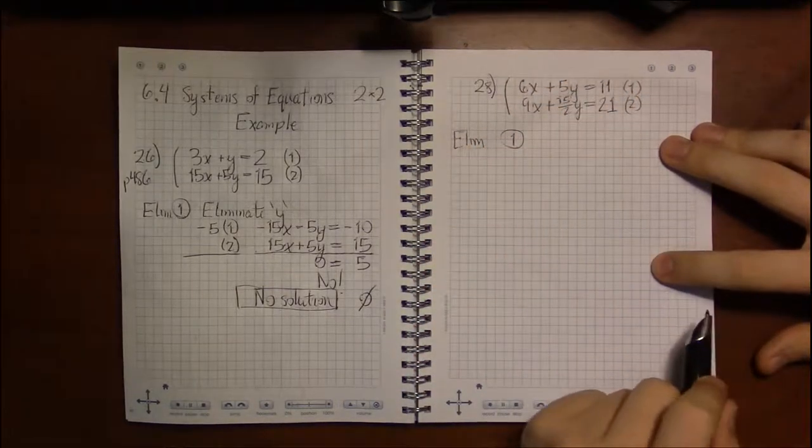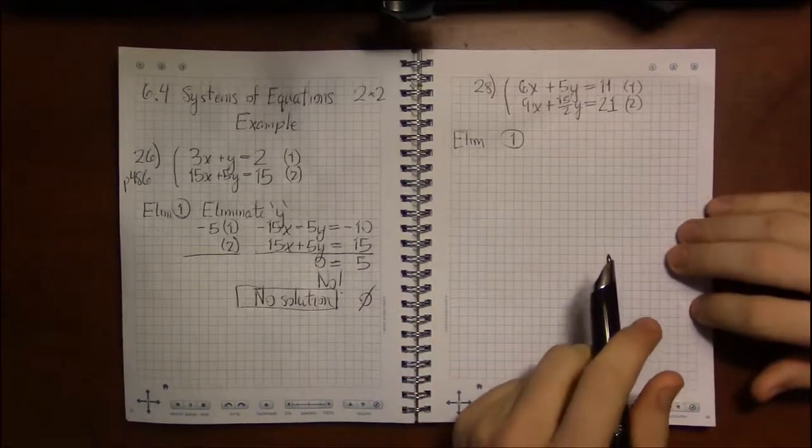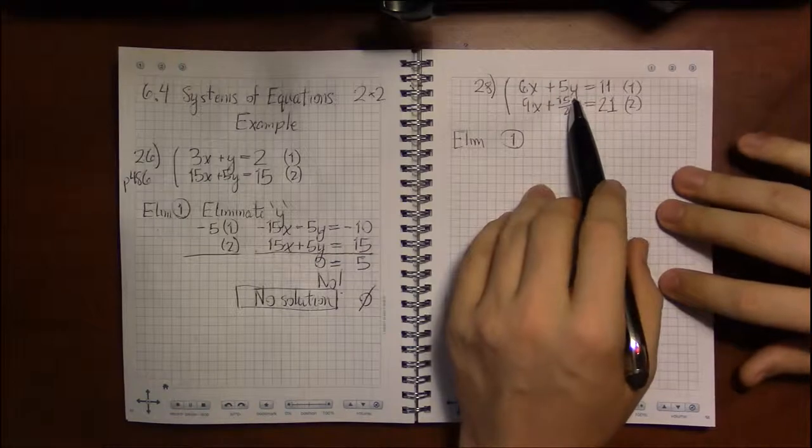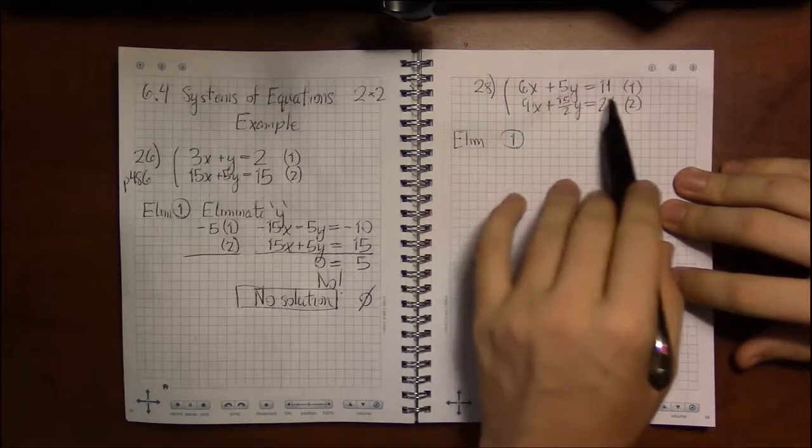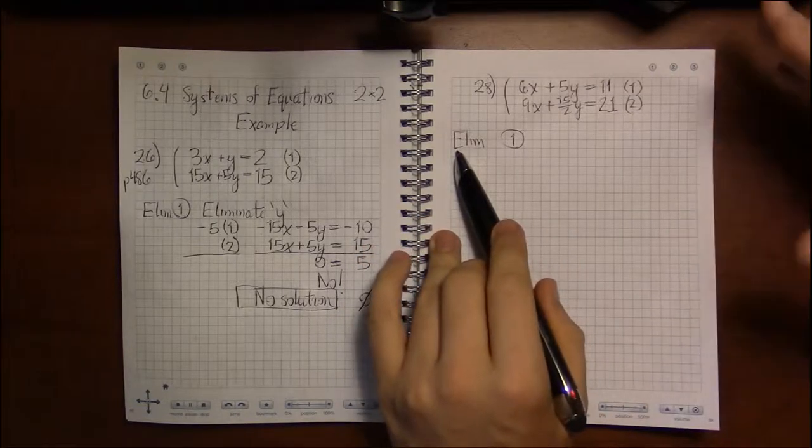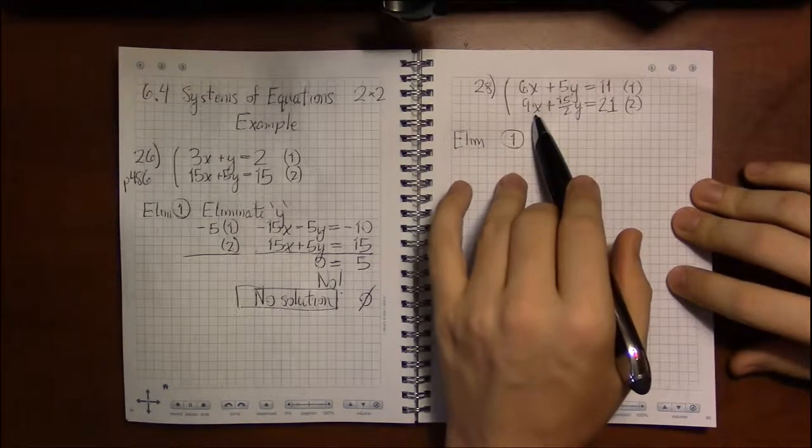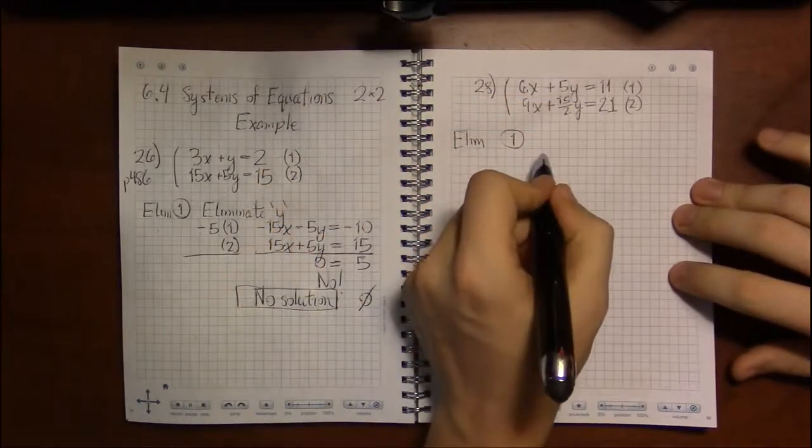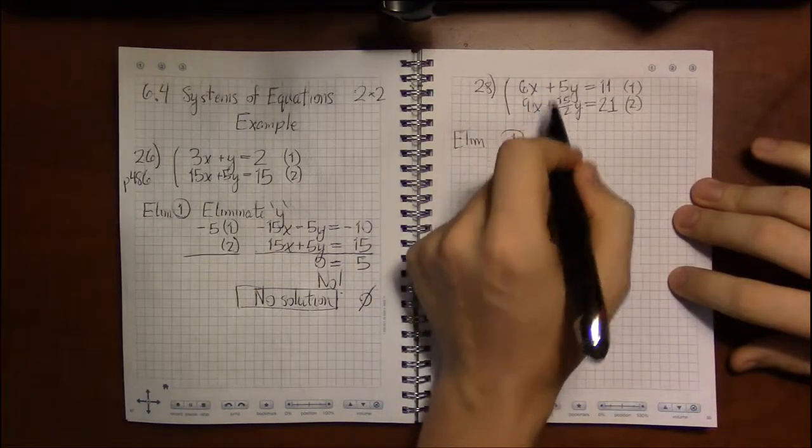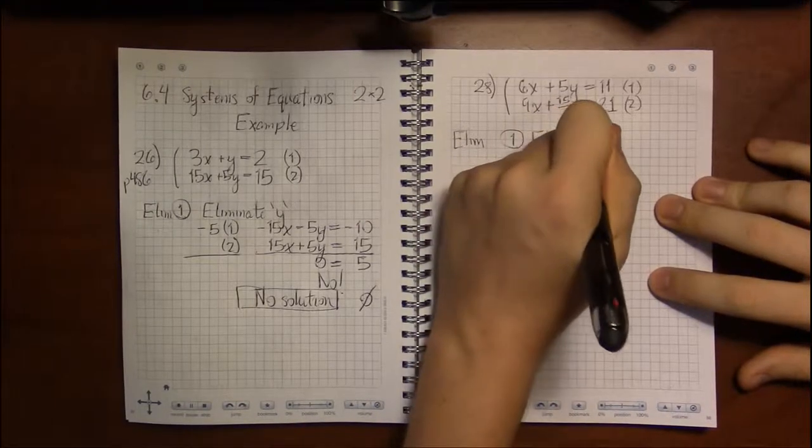So at least for me my default is elimination. Yours might be different because you're more comfortable with substitution. You just know how to do the messy algebra to do this. You don't know how to do elimination. You haven't got the hang of it yet. Fine. Not a problem. But in this case I've got the camera. I've got the pen. I'm doing it my way.